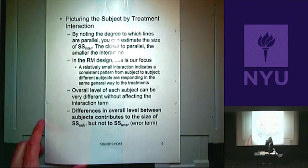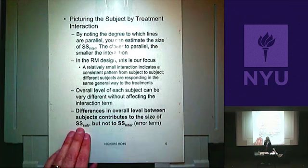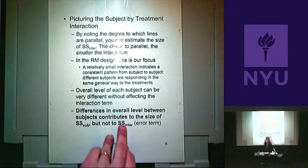Differences in overall level between subjects contribute to SS sub but not to SS interaction. It's like making the denominator smaller in our matched T — we made our denominator smaller because we got rid of that extraneous variance.